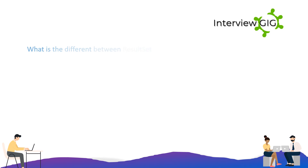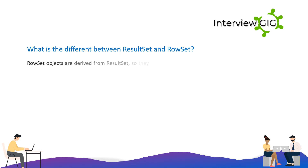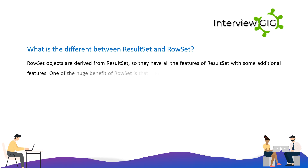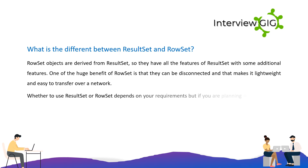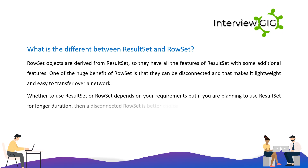What is the difference between ResultSet and RowSet? RowSet objects are derived from ResultSet, so they have all the features of ResultSet with some additional features. One huge benefit of RowSet is that they can be disconnected, making them lightweight and easy to transfer over a network. Whether to use ResultSet or RowSet depends on your requirements, but if you plan to use the result for a longer duration, a disconnected RowSet is a better choice to free database resources.